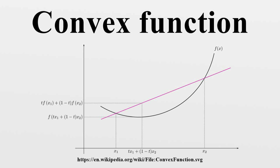A function is midpoint convex on an interval c if this condition holds; this is only slightly weaker than convexity. For example, a real-valued Lebesgue measurable function that is midpoint convex will be convex by Sierpinski's theorem. In particular, a continuous function that is midpoint convex will be convex. A differentiable function of one variable is convex on an interval if and only if its derivative is monotonically non-decreasing on that interval.